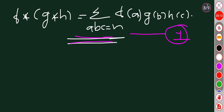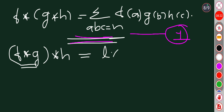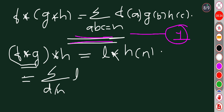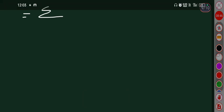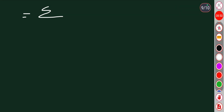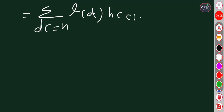This is equation number one: f star (g star h) of n equals summation over abc equals n of f of a times g of b times h of c.